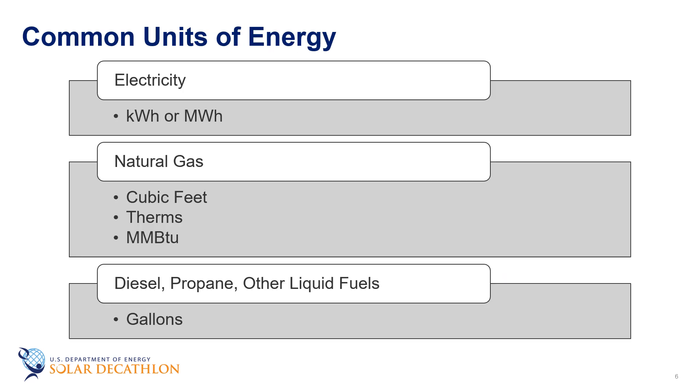Some other units of measurement that are common for different energy sources are shown here. You're likely to see these units when looking at the cost of energy on a bill from a utility company or fuel supplier. For electricity, energy is measured in either kilowatt hours or megawatt hours. For natural gas, there are a few different units of measurement you will see. Cubic feet is the actual volume of gas that is measured. And this is typically converted into BTUs on your utility bill. Sometimes natural gas is expressed in therms, which is another measurement of heat energy, which is approximately equal to 100,000 BTUs. Then liquid fuels like diesel or propane are typically measured in gallons.